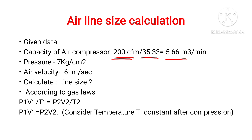After conversion, our converted value is 5.66 meter cube per minute. The next parameter we require is the working pressure of the air compressor — here we have 7 kg per square centimeter. The next parameter is air velocity, for which we have taken 6 meter per second. This is the line size we have to calculate.